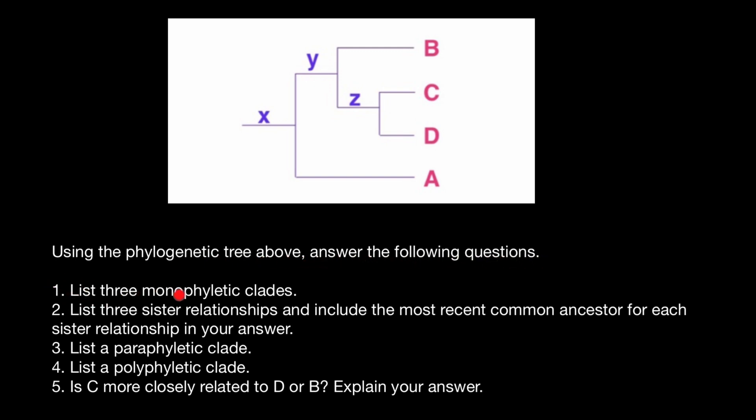The first question lists three monophyletic clades. Monophyletic clades we define as, we just take a certain common ancestor, for example, here. This is going to be a common ancestor of the species C and D.